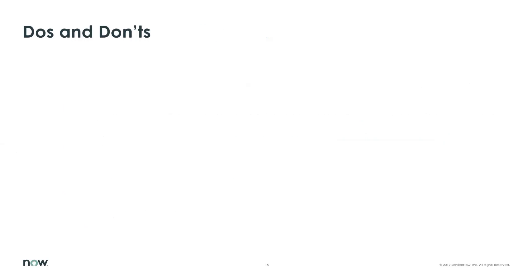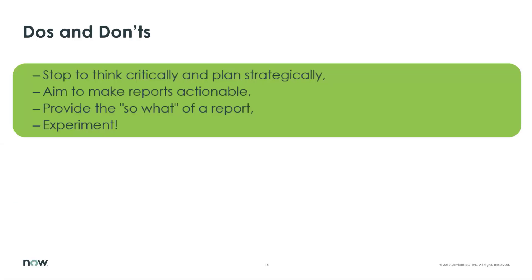Now that we've gone through two examples, what are some do's and don'ts? First off, we want you to stop, think critically, and plan strategically. You want to make sure that your reports are actionable — it's not just a pretty color or a pretty picture; it actually gives you something to do. You want to provide the 'so what': why are you doing this? That's what part of the goal question metric helps you define before you go creating it. And then experiment a little bit — within this framework, there is tons of room for experimentation to figure out what reports, what reporting format, and what order, all need to be in to most effectively tell you if you're accomplishing your goals.